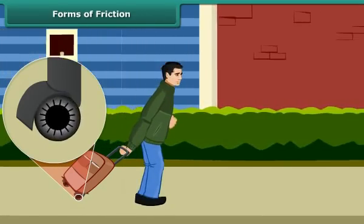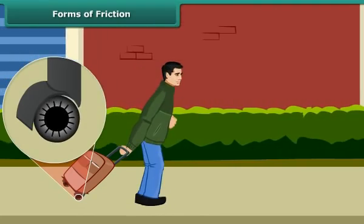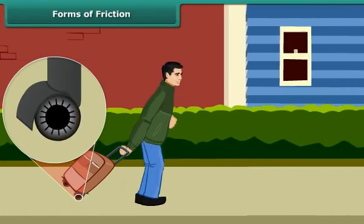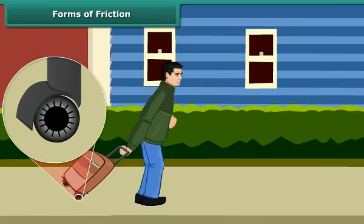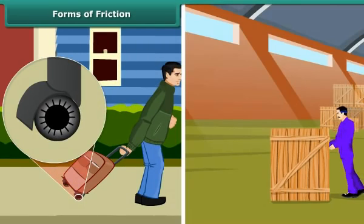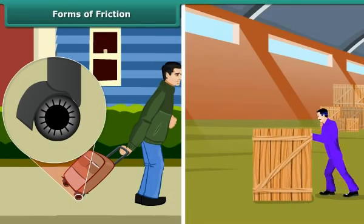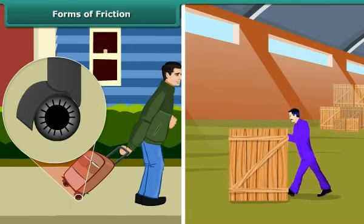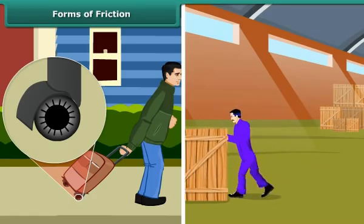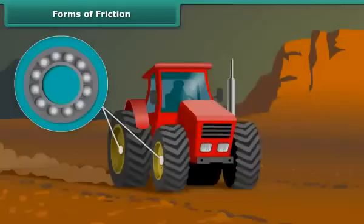The force of friction between the rollers on a body and the surface is called rolling friction. Rolling friction is much less than sliding friction. Since rolling friction is smaller than sliding friction, sliding is replaced in most machines by rolling.